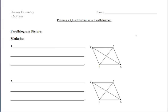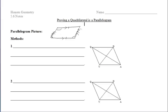At this time, I'd like you to draw a picture of a parallelogram where it says 'parallelogram picture' and label it with all of the properties that you know to be true. We should be labeling that both pairs of opposite sides are parallel, both pairs of opposite sides are congruent, both pairs of opposite angles are congruent, and the diagonals bisect each other.